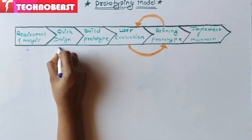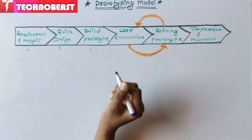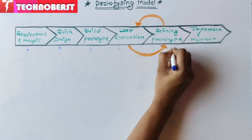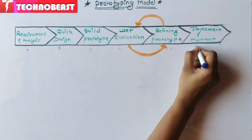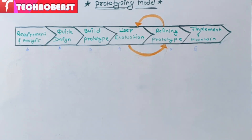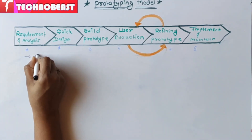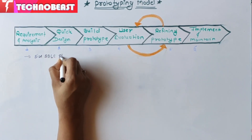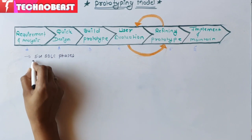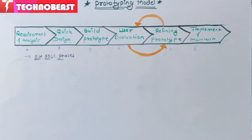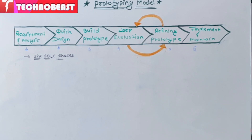The six phases of the prototyping model are: first, requirement analysis; second, quick design; third, build prototype; fourth, user evaluation; fifth, refining prototype; and sixth, implement and maintain. So these are the six SDLC phases of the prototyping model.